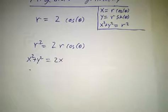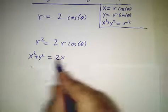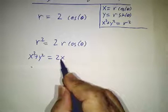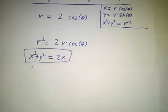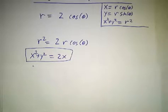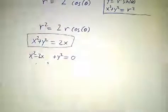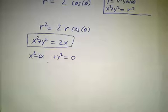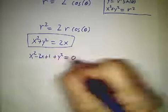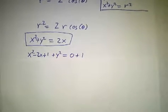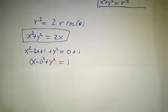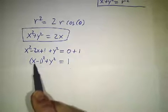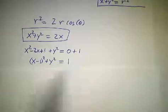And then we say, oh, r squared is x squared plus y squared, and r cos theta is x. And there you go. You've got an equation in terms of x and y. You've got it in Cartesian coordinates. Then we manipulate it a little bit. We subtract 2x from both sides. And then I'm going to add 1 to both sides. And you notice that x squared minus 2x plus 1 is x minus 1 squared. So x minus 1 squared plus y squared equals 1.